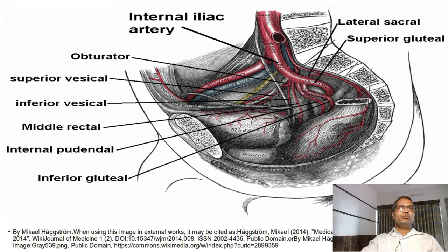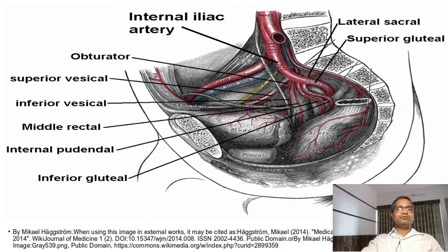Posteriorly, there is presence of structures — mainly the lumbosacral trunk and then the sacroiliac joint. Now anterior relations of this internal iliac artery: in female, the internal iliac artery lies just posterior to the ovarian fossa, meaning anteriorly there is presence of the ovarian fossa. Also there is presence of small arteries, mainly continuation of the obturator artery, which lies anteriorly.